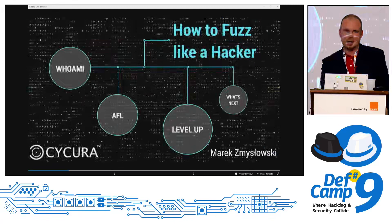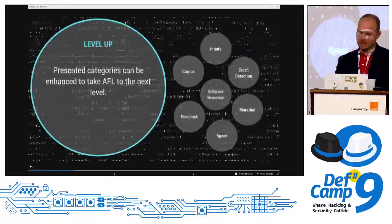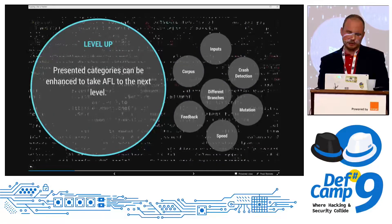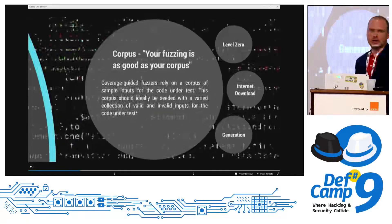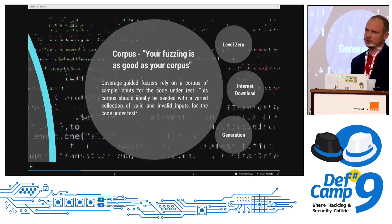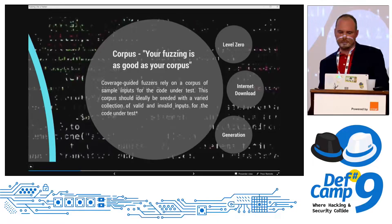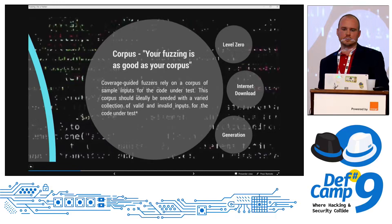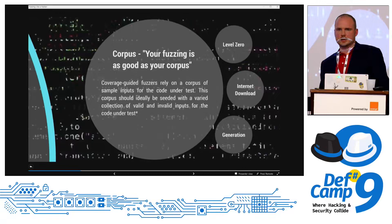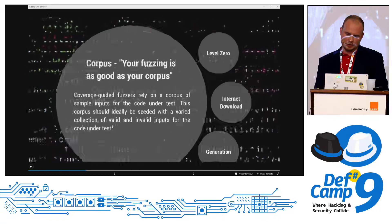So how we can speed up the process. There are several different areas where we can make it better and achieve better results. Let's start from the beginning. At the beginning there is a corpus file, an initial test case that you need to create. Most guided fuzzers, including libfuzzer or HongFuzz, all rely on an initial corpus, and your fuzzing will be as good as the initial corpus.